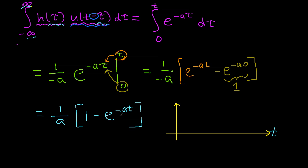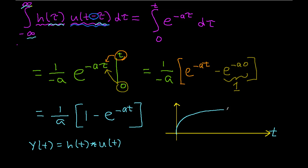You'll notice that this is now a function of t — this is our y of t, which is h of t convolved with u of t. When I graph it, it looks something like this. We call this an asymptotically increasing exponential; it's asymptotically approaching the value 1 over a.